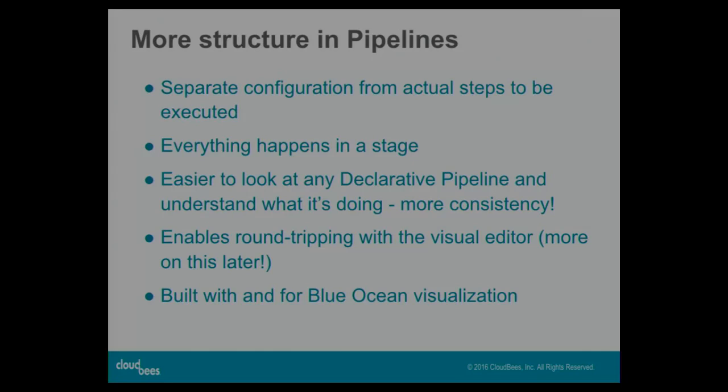It's more like configuration. The structure also enables round-tripping with the visual editor, which has a beta coming out on Monday — more detail on that later. The whole thing has been built with and for Blue Ocean visualizations, so we've got markings in Blue Ocean for stages that are skipped due to a failure in an earlier stage, and for stages that are skipped because you conditionally chose not to execute them. So we've got a predictable execution model and better visualization of that execution model.